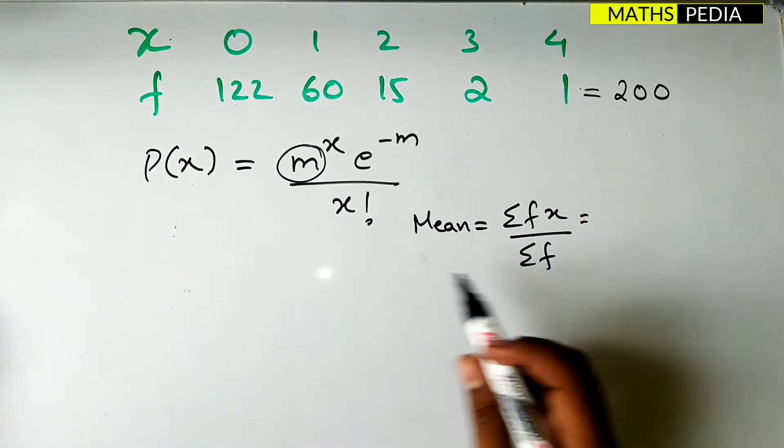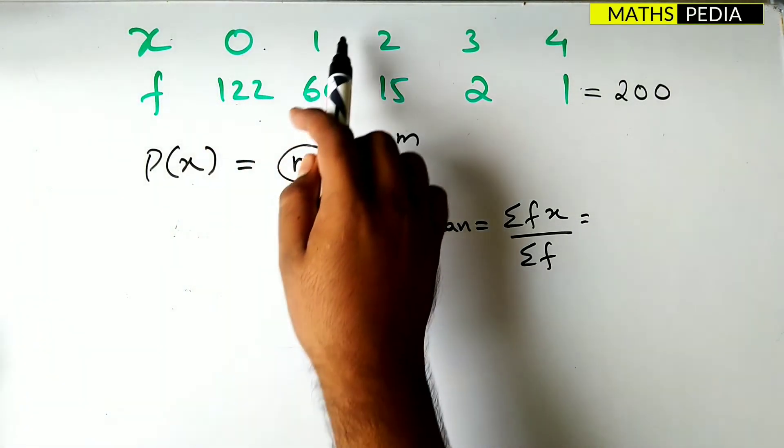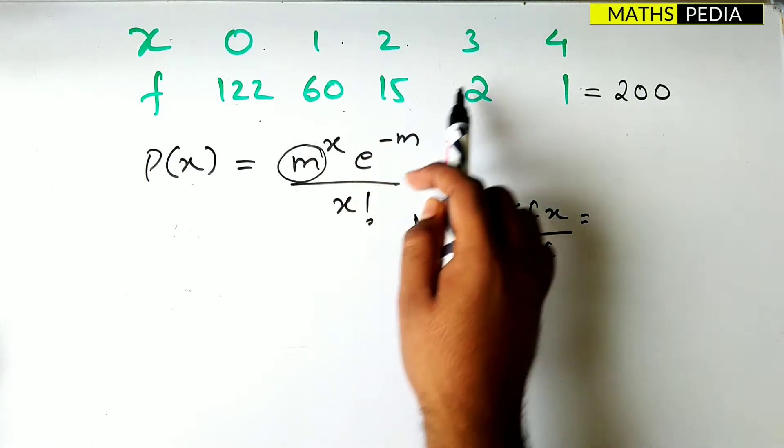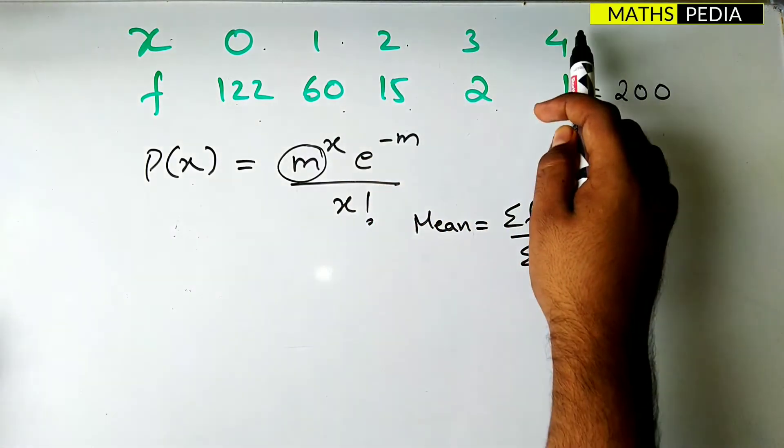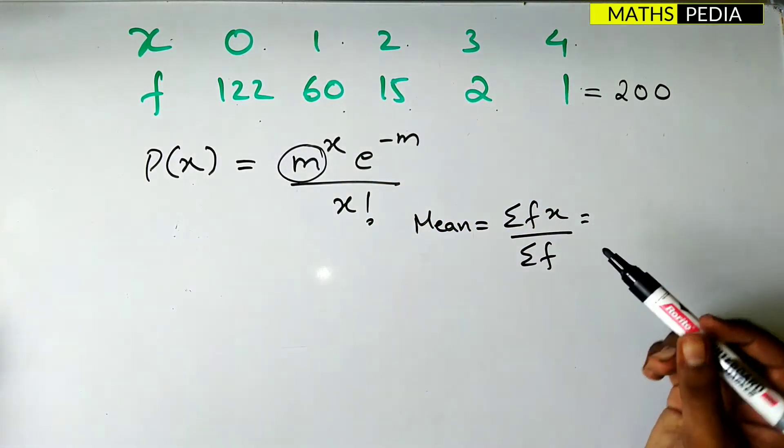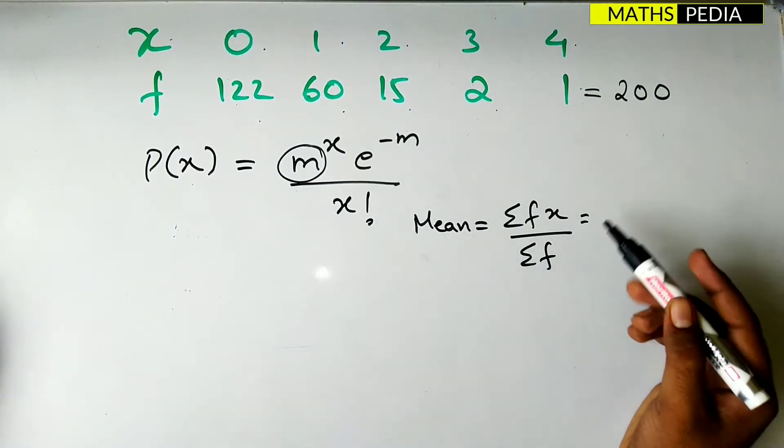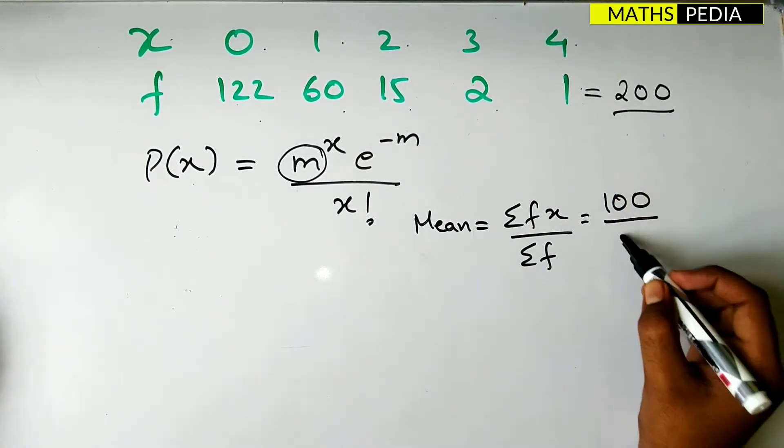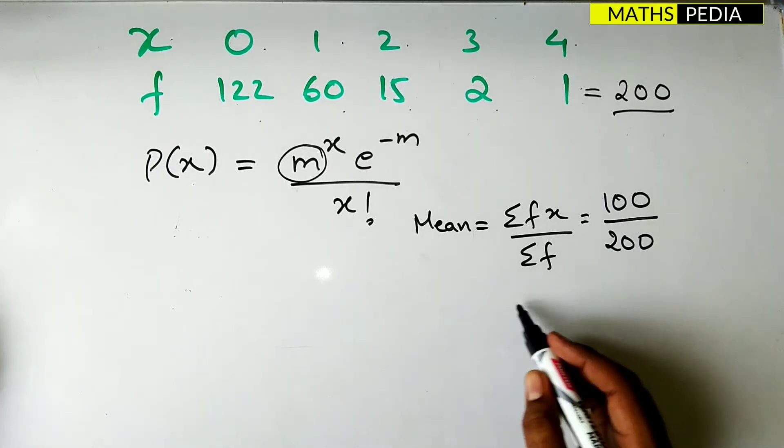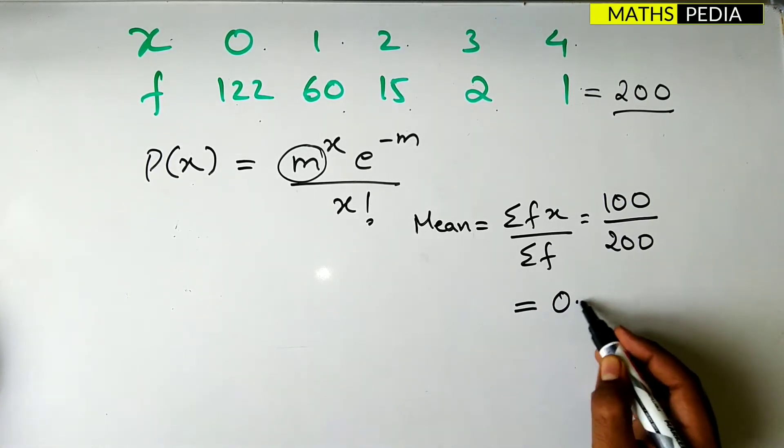What is summation of fx? 0 into 122 plus 1 into 60 plus 2 into 15 plus 3 into 2 plus 4 into 1. You will get it as 100. Summation of f is given as 200. Therefore the final mean will be 0.5.